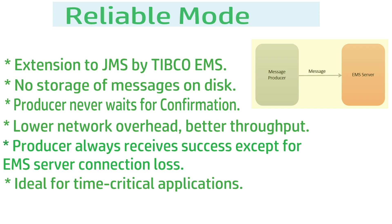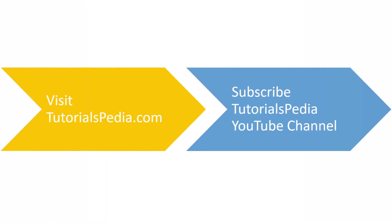Reliable mode is also ideal for time-critical applications. Its throughput is even better than non-persistent mode because there are no acknowledgements under any conditions — all messages flow unidirectionally from producer to EMS server. However, as with non-persistent mode, there may be data loss, so it should only be used when the application can tolerate that.